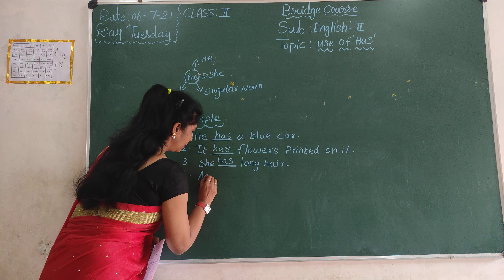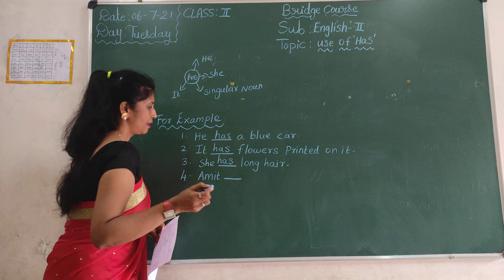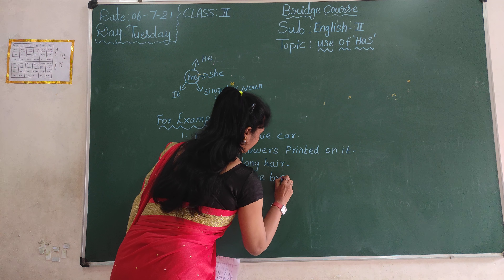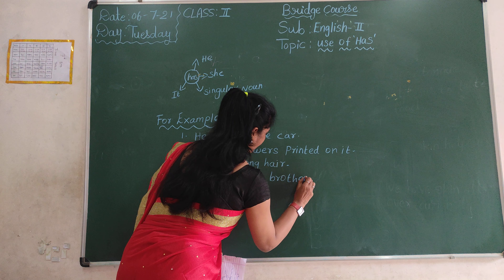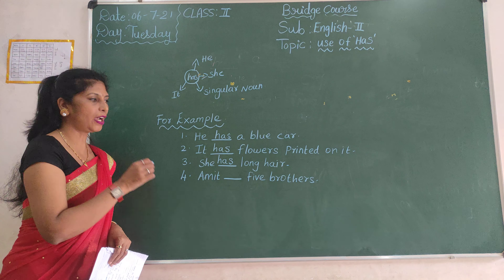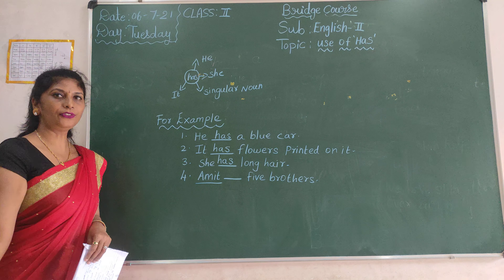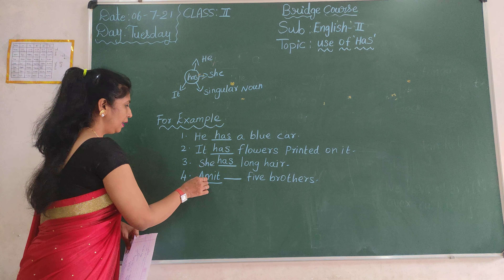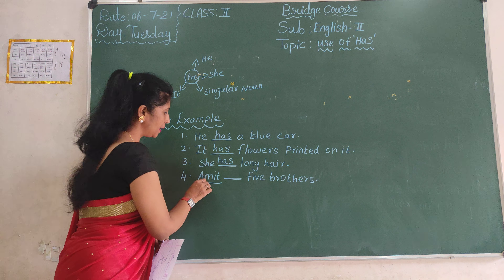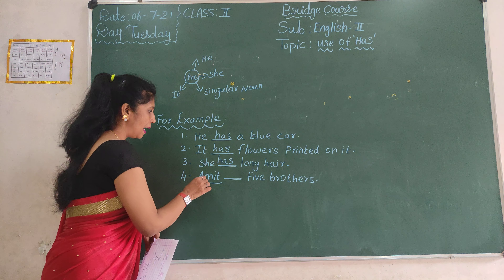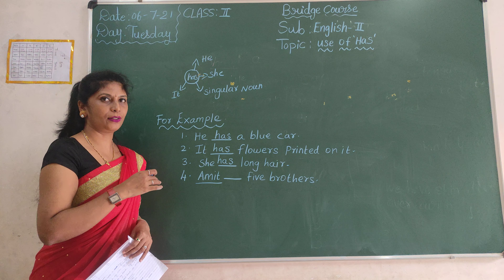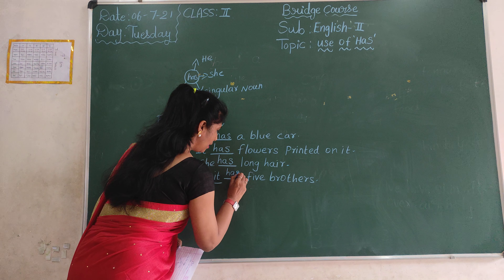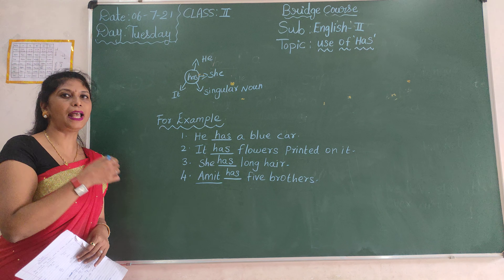Next example: Amin dash five brothers. Amin is a naming word — the name of a person, one person. So for one person we write 'has'. Amin has five brothers. Next: Amin dash gone to the market.